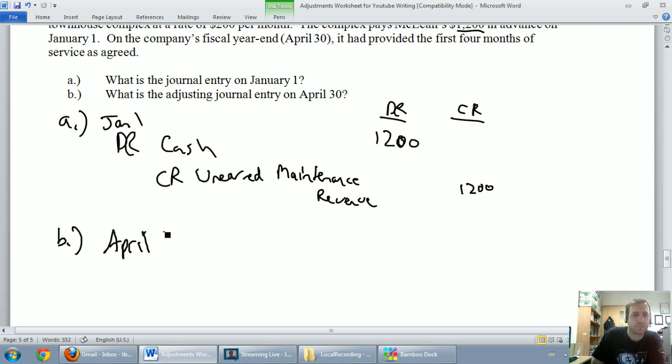April 30th is our fiscal year end, our financial year end. We're going to do financial statements. And what we've got to say on our fiscal year end is we don't owe these guys $1,200 worth of service anymore. It says we've provided the first four months of service as agreed. So if we provided the first four months of service as we agreed upon, we don't owe them $1,200 anymore. We've done some of the work. We've got to figure out how much of that work we've done.